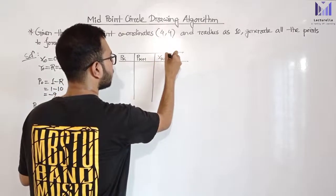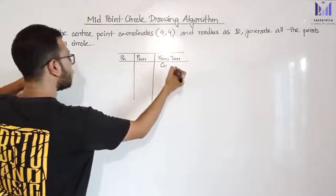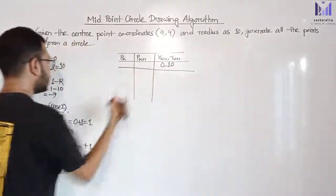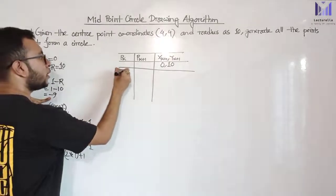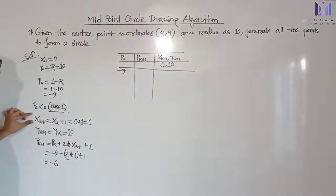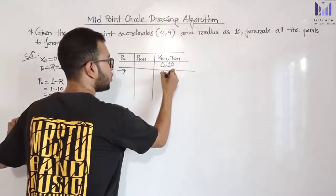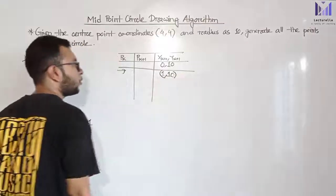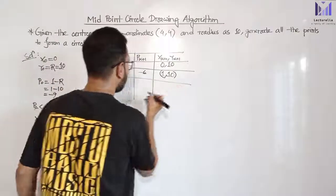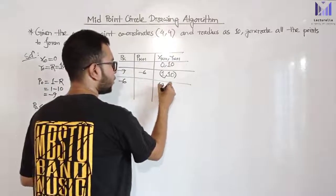For xk+1 and yk+1: initial x is incremented by 1. We check the initial decision parameter which is minus 9. Since minus 9 is less than zero, case 1 is satisfied. We increment xk+1. The value changes and the next decision parameter is calculated as minus 6. Since minus 6 is also less than zero, case 1 is satisfied again. x value is incremented once more.